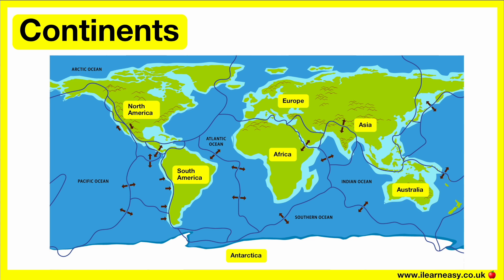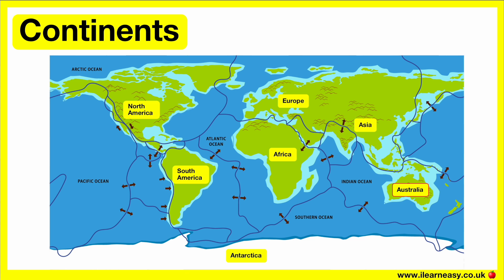There are seven continents. The seven continents, from the largest to the smallest, are Asia, Africa, North America, South America, Antarctica, Europe, and Australia.